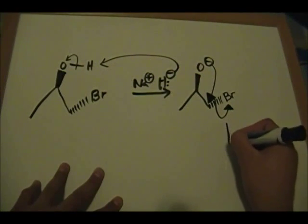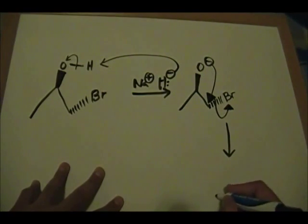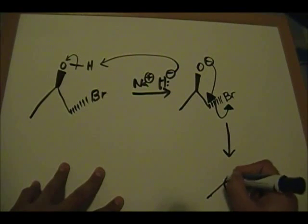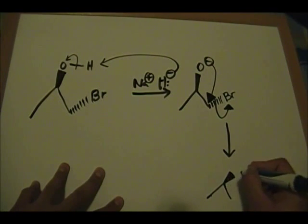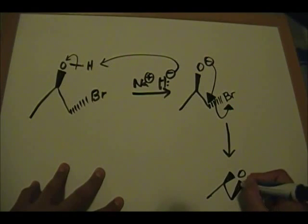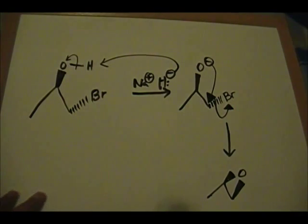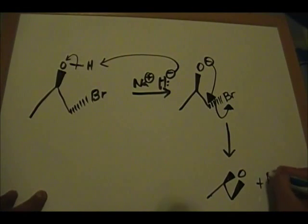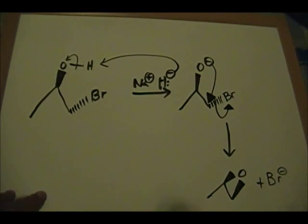Oxygen is forming a bond here, kicking off the pair of electrons and the bromine out of the way. So the product will be your epoxide, wedged, and you have your Br minus.